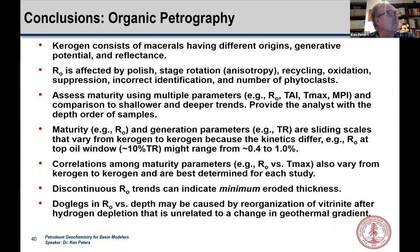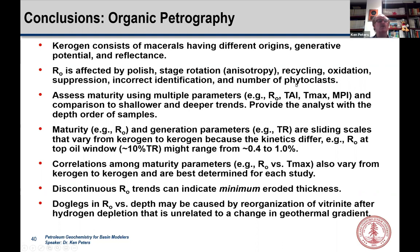In conclusion, kerogen consists of macerals having different origins, generative potential, and reflectance. The reflectance is affected by many things you need to be aware of: polish and preparation of the sample, stage rotation and anisotropy above about 1% reflectance, recycling, oxidation, suppression, and incorrect maceral identification. Monitor the number of phytoclasts that have been measured — too few measurements give unreliable results.